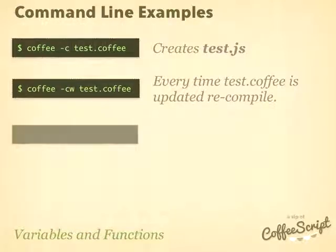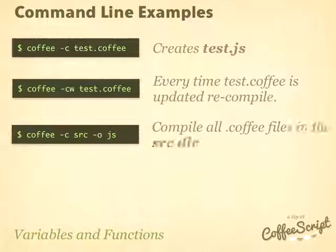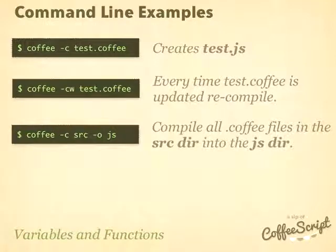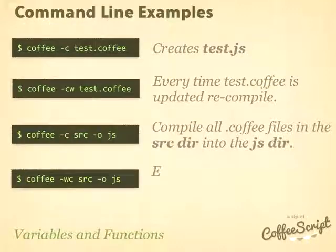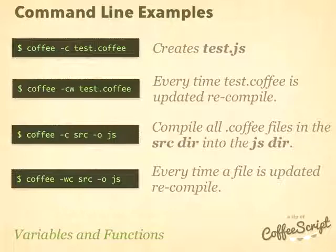If you have a bunch of files in a source directory, you can run a command that looks for .coffee files inside that directory, compiles each into JavaScript, and outputs them into the JavaScript directory using the -o flag. If you were doing a lot of development, you could also add the -w flag to watch the source directory, so every time a .coffee file changes, it compiles it into the JS directory.